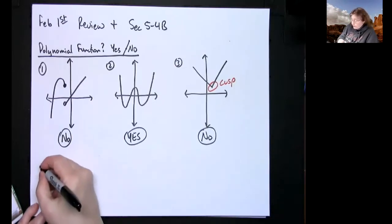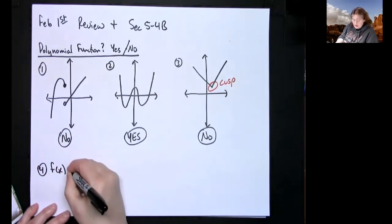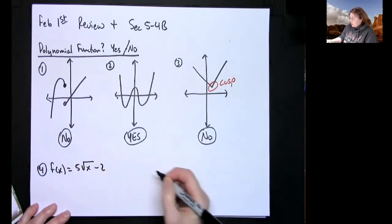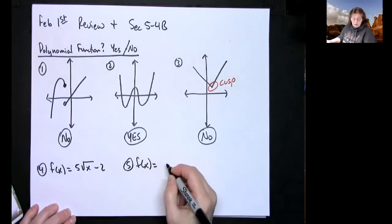I could give it to you in function notation, so I could do f(x) = 5√x - 2, or I could give you another one, f(x) =